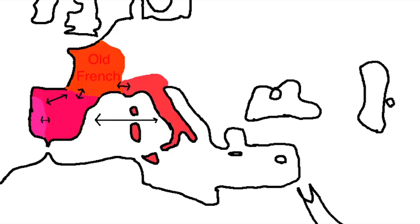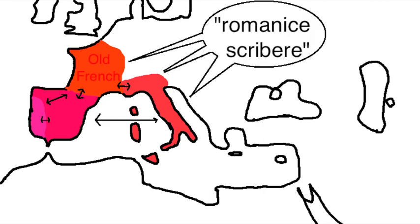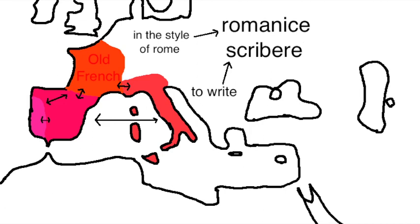While it was still mutually intelligible with the other dialects of Latin, the phrase Romanice scribere was coined, which literally meant something like to write in the style of Rome, but basically came to mean to write in a language descended from Latin.